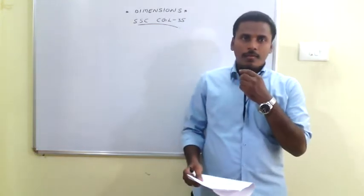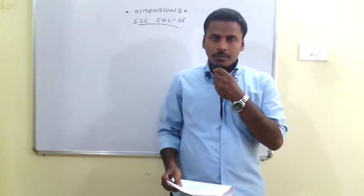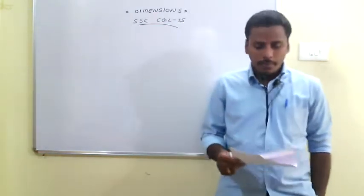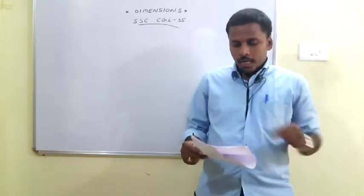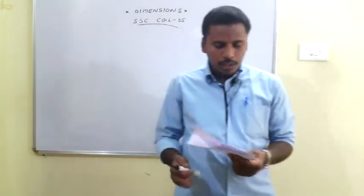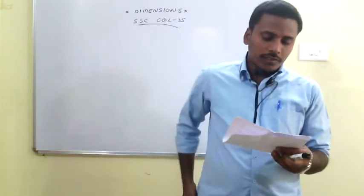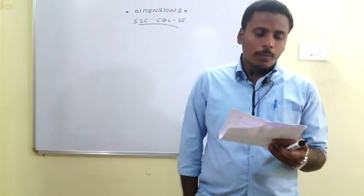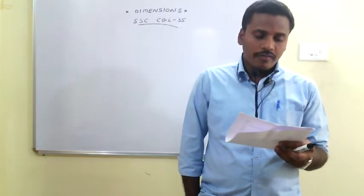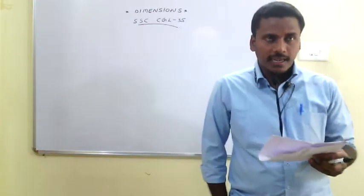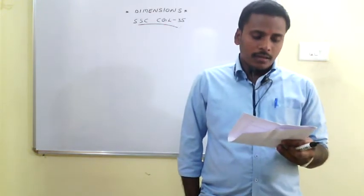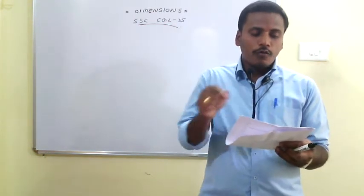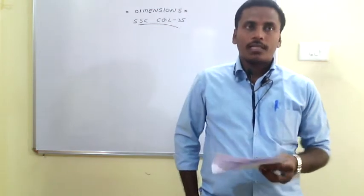Hello friends, this is Gangadhar from Dimensions Gunther. To discuss the explanation for the quantitative questions from the CGL 35th paper, let us discuss the first question. The question is: without actual division, find which of the following numbers are divisible by 2, 3, 4, 5, 7, 9, 10, 11. We need to check the divisibility rules to find the required answer.